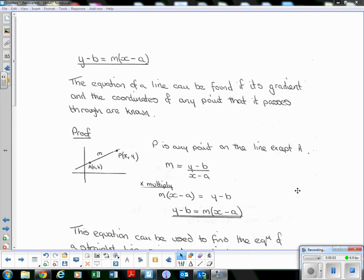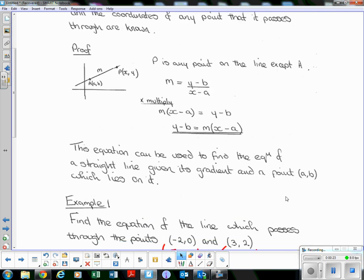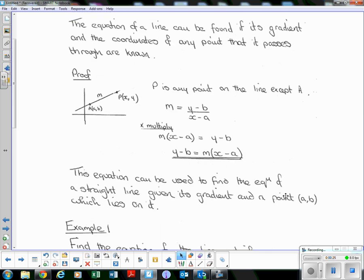SQA Higher Maths lesson six on the straight line topic. Today we're looking at a bit of National Five revision: y minus b equals m bracket x minus a. The equation of a line can be found if its gradient and the coordinates of any point that it passes through are known. Just going over the National Five work that you should be competent with.